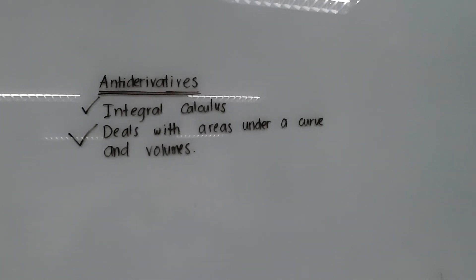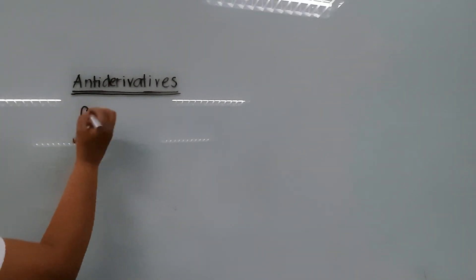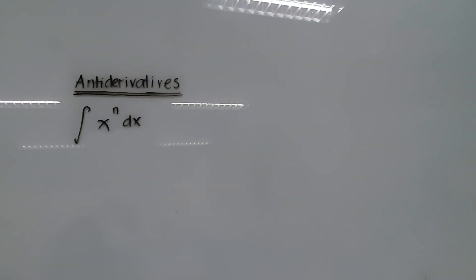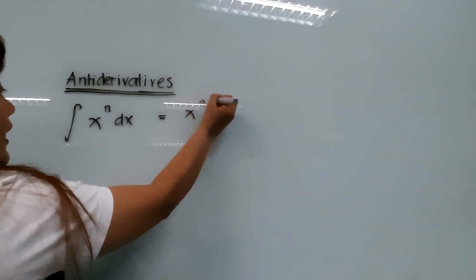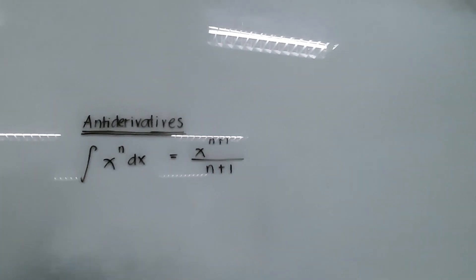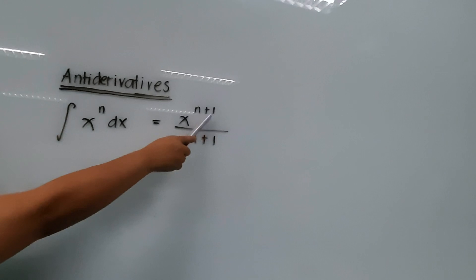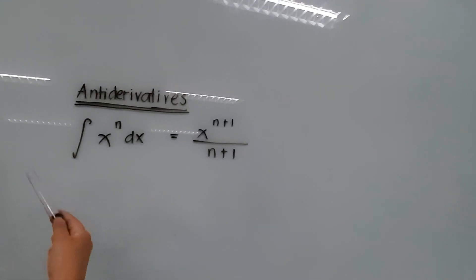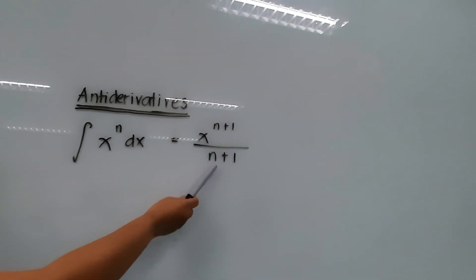Let's proceed to the first formula for anti-derivatives. For example, we have the integral of x raised to n, dx. The formula to get the anti-derivative of x raised to n dx is x raised to n plus 1, over n plus 1. If you remember, when deriving, you subtract 1 from the exponent and multiply n by the numerical coefficient. For anti-derivatives, you do the reverse: add 1 to the exponent, then divide by n plus 1.